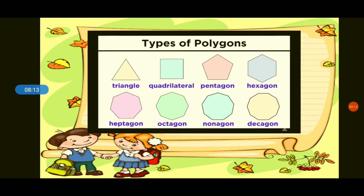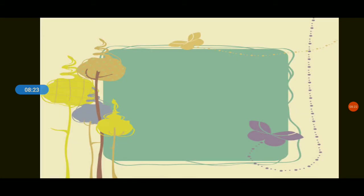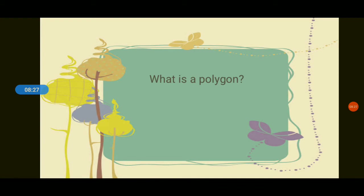So what is a polygon? A closed plane figure that meets at its endpoints. Now, what are the different polygons? Can you give me the different polygons from three sides to eleven sides? Everyone, go.